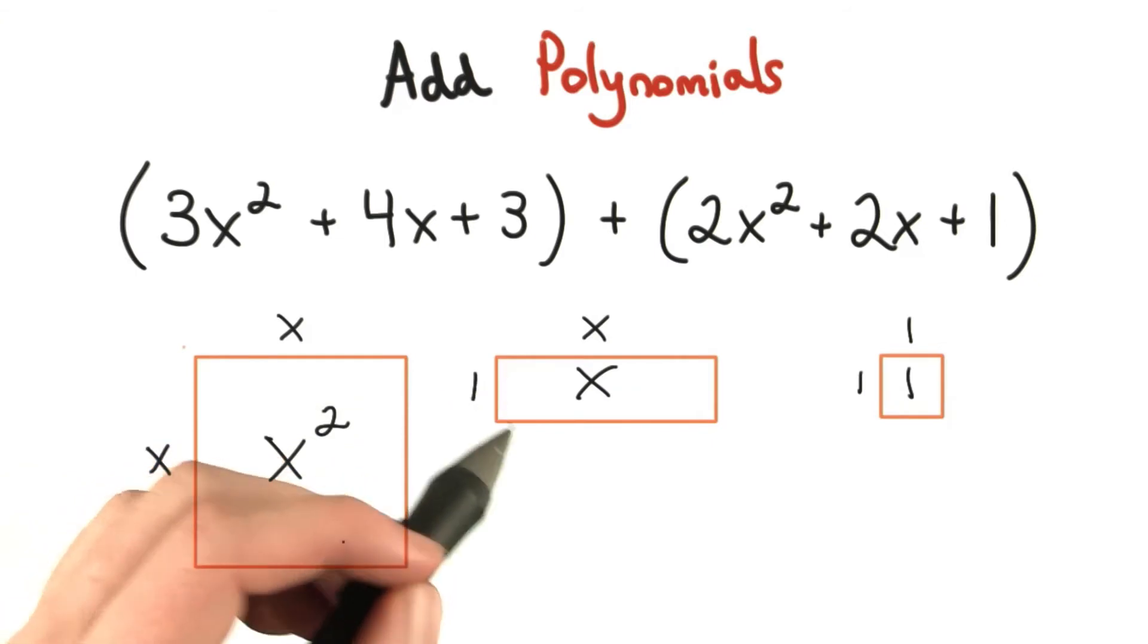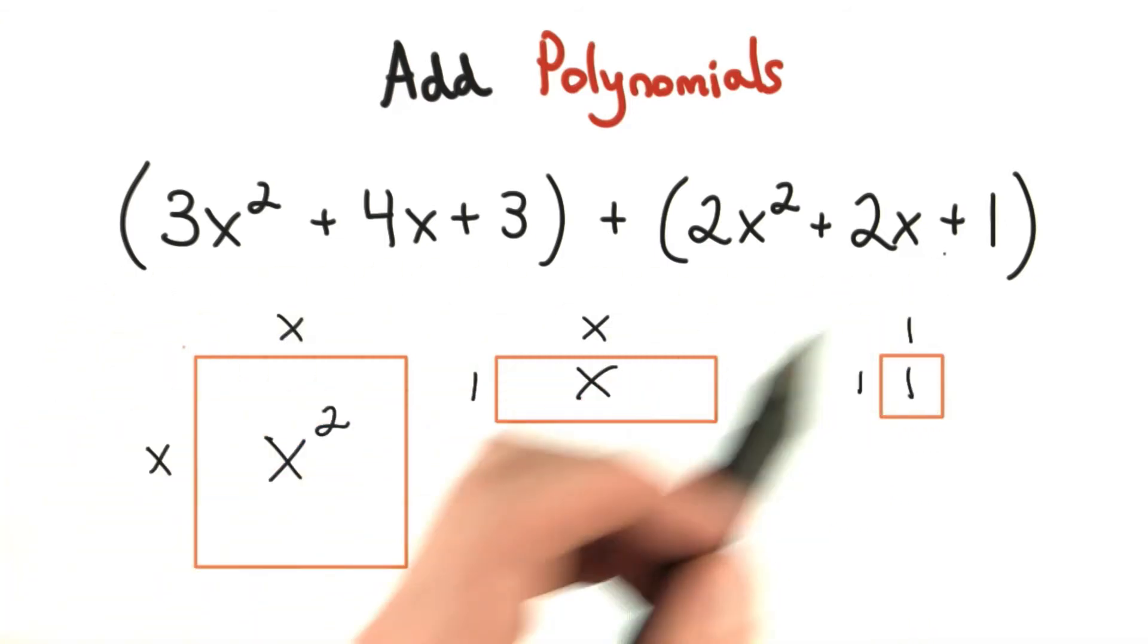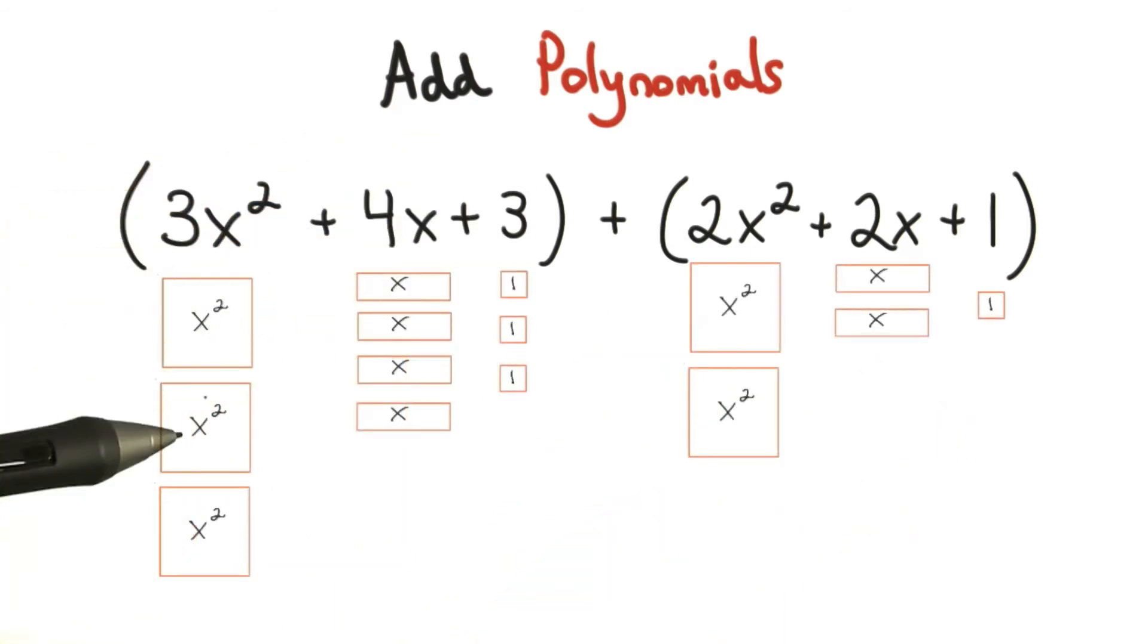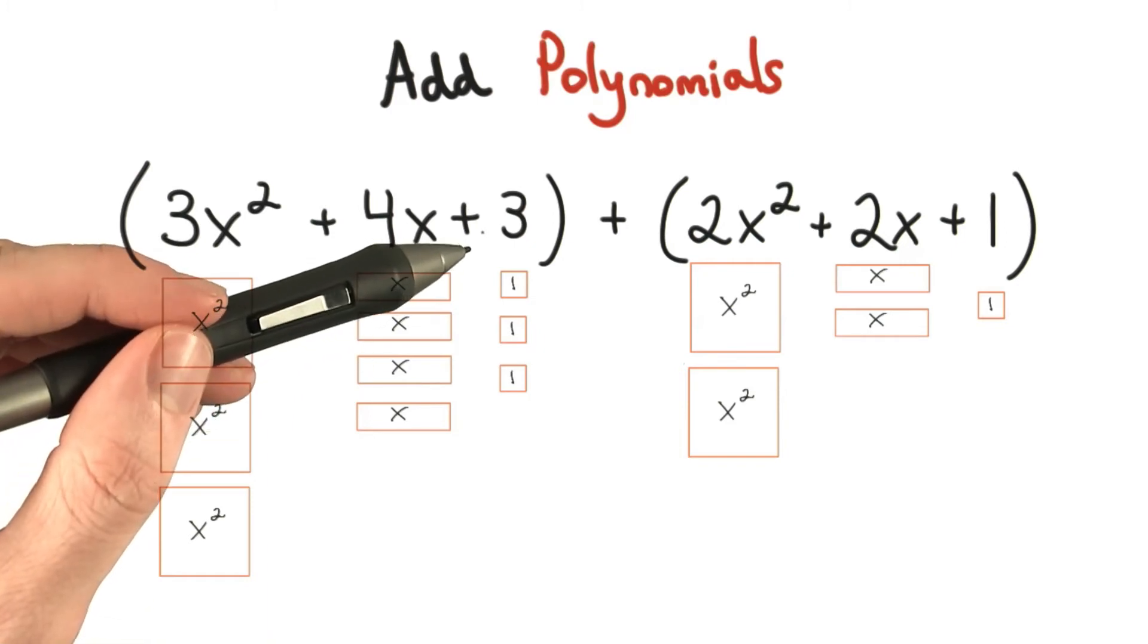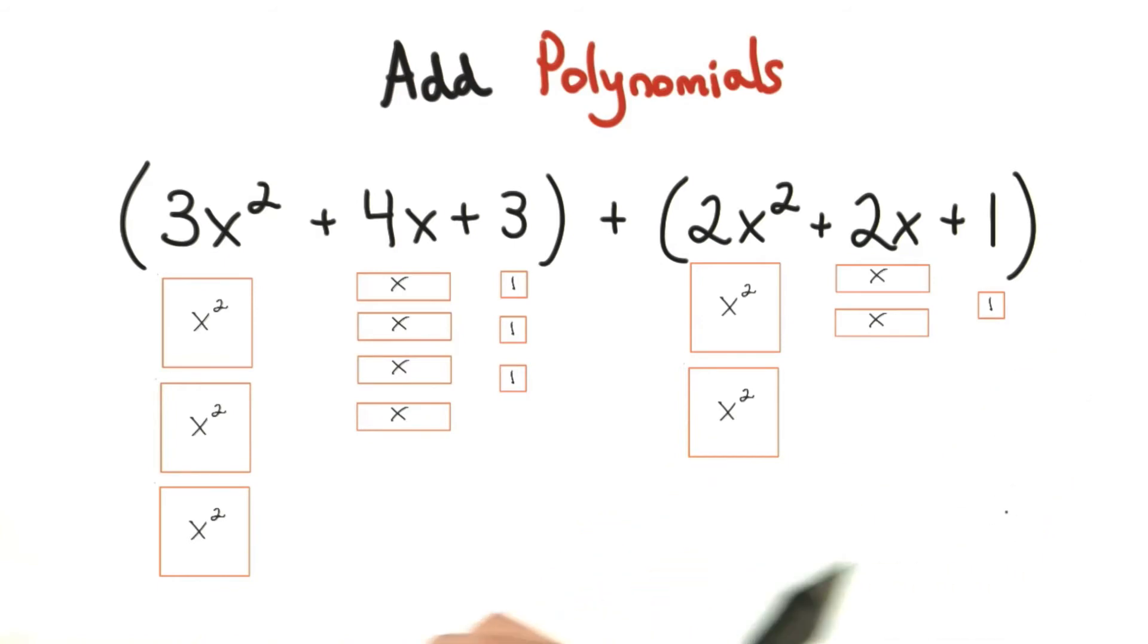I drew these shapes out to help us think about like terms. So let me show you what this problem would look like using these shapes. For this first trinomial, I would have 3 x squareds, 4 x's, and 3, or 3 1's. You can see a similar representation for the second trinomial.